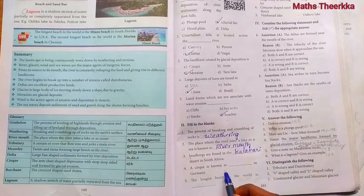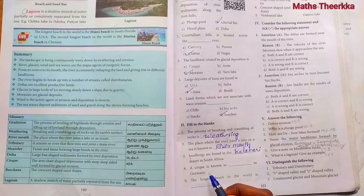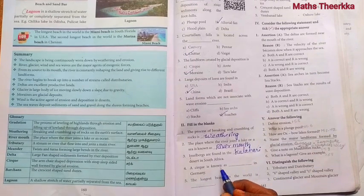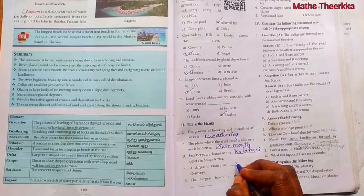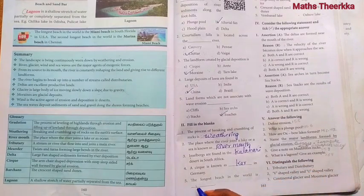Fourth one, a cirque is known as kar in Germany.